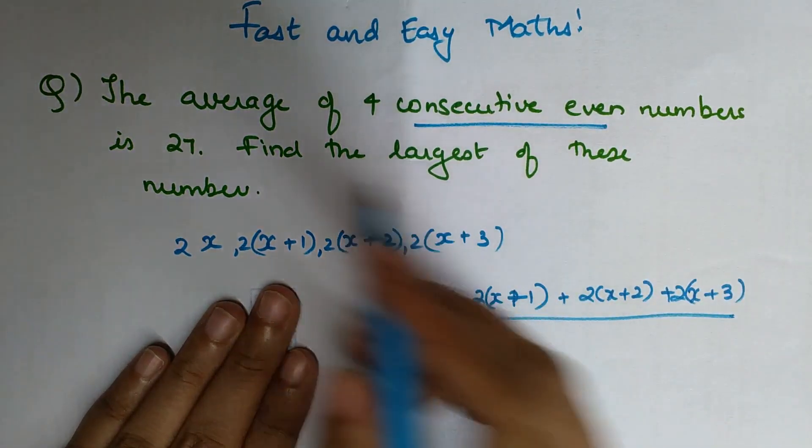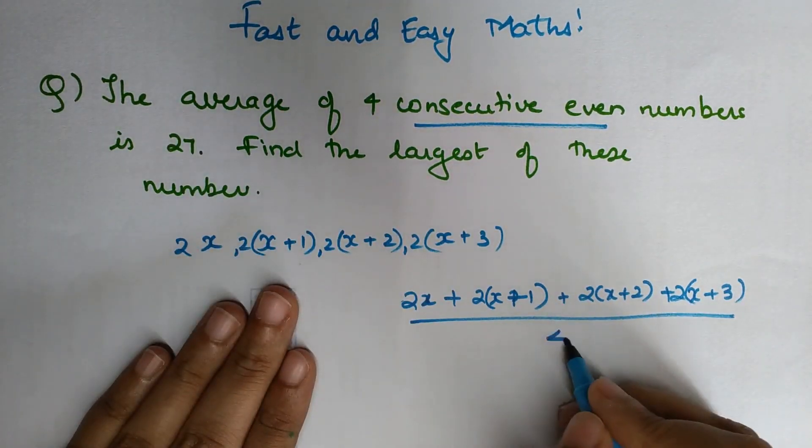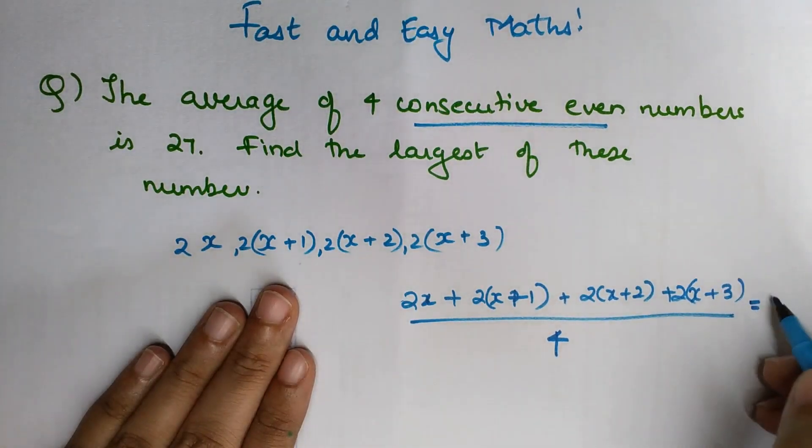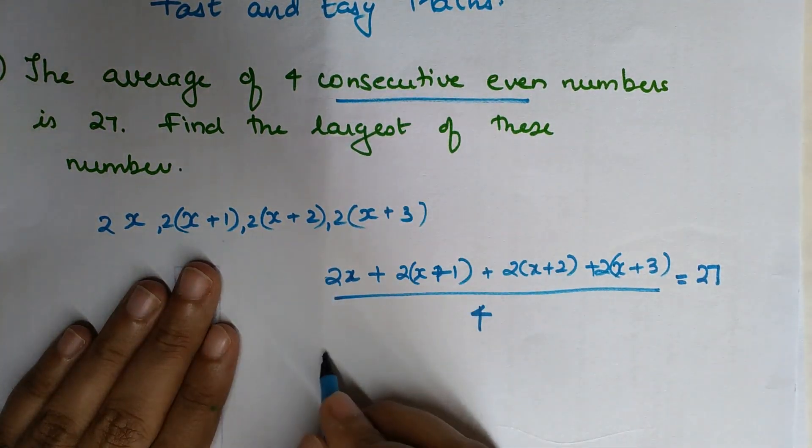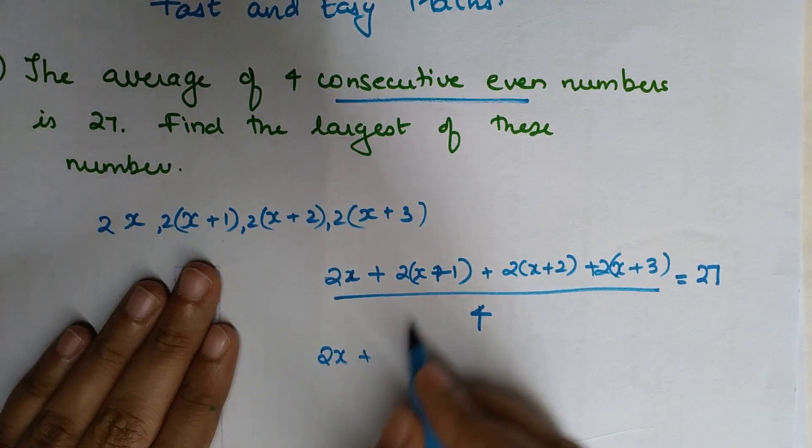The whole thing, because we need to find the average, will be divided by 4, and this equals 27. So now let's open the brackets: 2x plus 2 into x is 2x, plus 2 into 1...